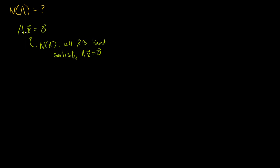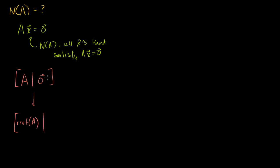AX is equal to the 0 vector — you could call it the system. The way you would solve it, and we've done this many times, you would make an augmented matrix. You'd have the 0 vector on the right-hand side, and then you'd perform a bunch of row operations to put the left-hand side into reduced row echelon form. The right-hand side is just going to stay 0, because when you perform those row operations on 0, you just get the 0 vector.